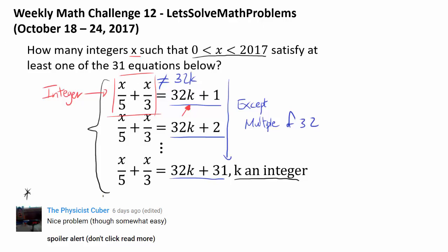But since 5 and 3 are relatively prime, this thing is telling us x is a multiple of 15, because you know x over 5 plus x over 3 is equal to 5x plus 3x over 15, or 8x over 15. And you know this thing has to be some integer.